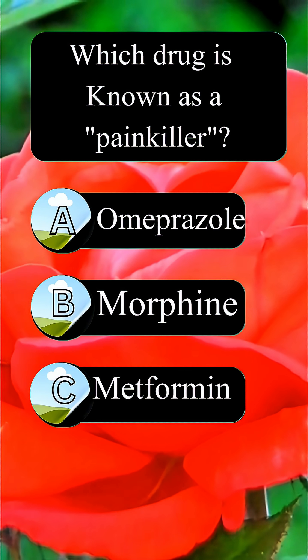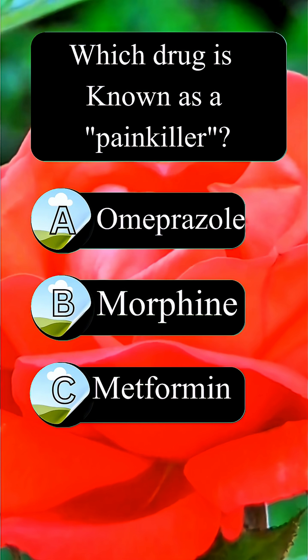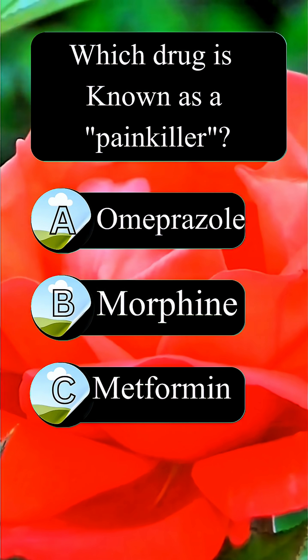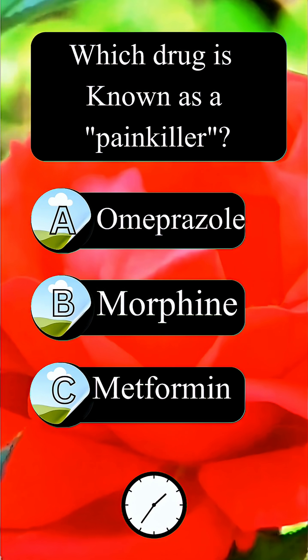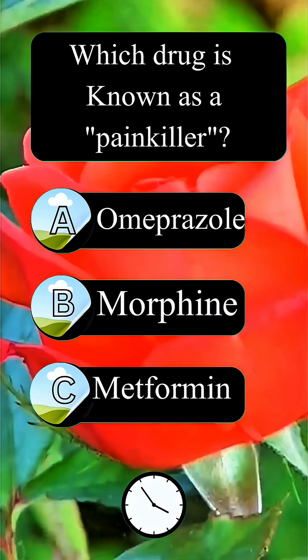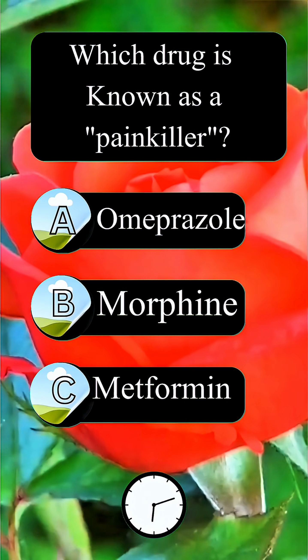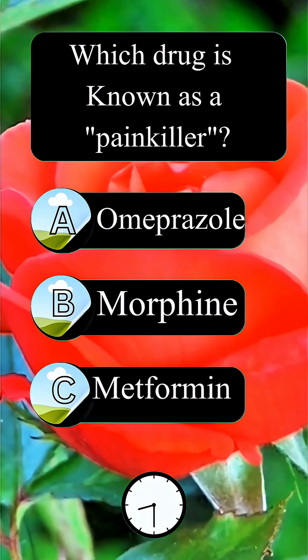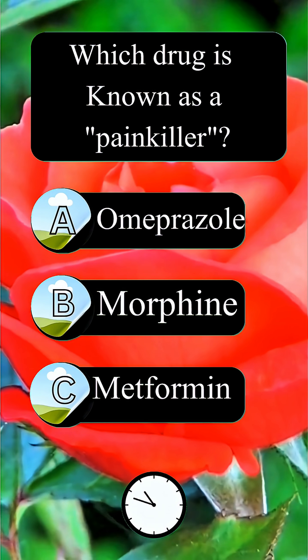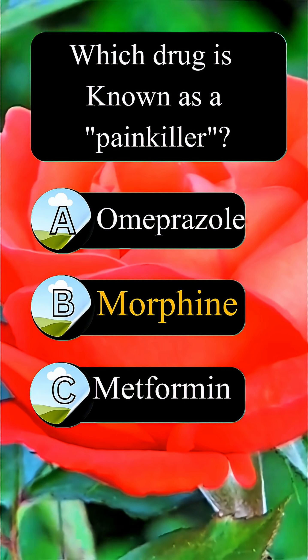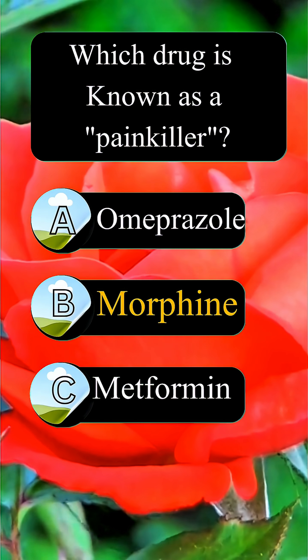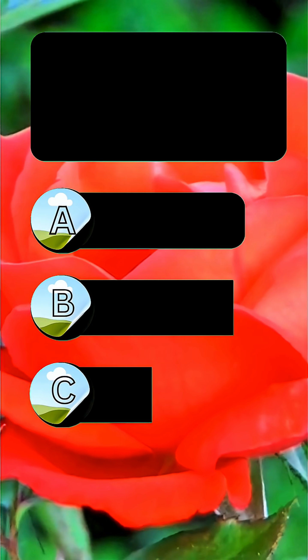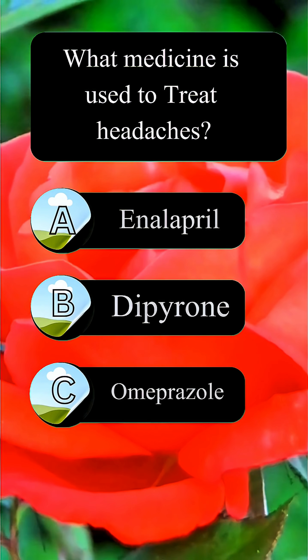Question 5. Which drug is known as a painkiller? Answer B. Morphine.